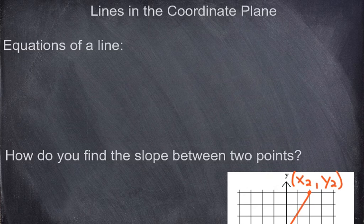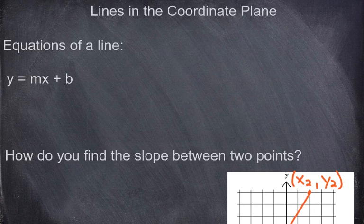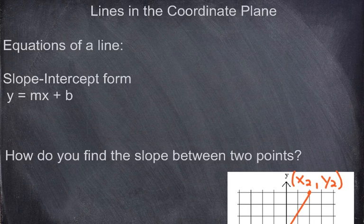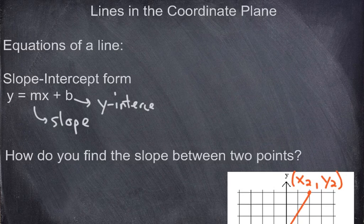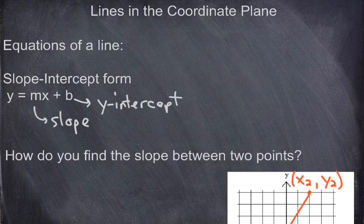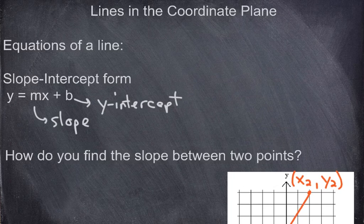The first one is y equals mx plus b. The name of this equation is the slope-intercept form. M is your slope, and b is your y-intercept. That's why it's called the slope-intercept form — because we know the slope m and we know the y-intercept b. This is the most common one we use when it comes to graphing a line, but let's talk about the other two as well.